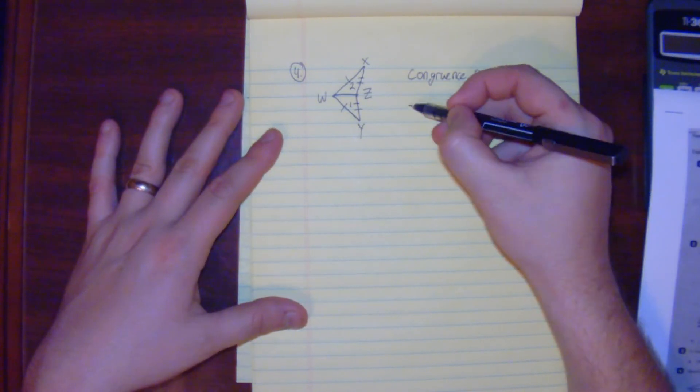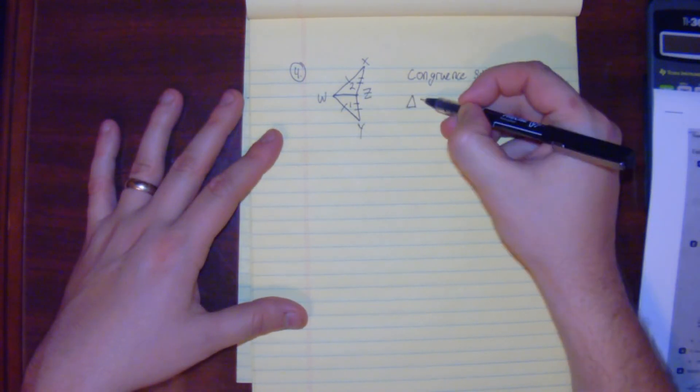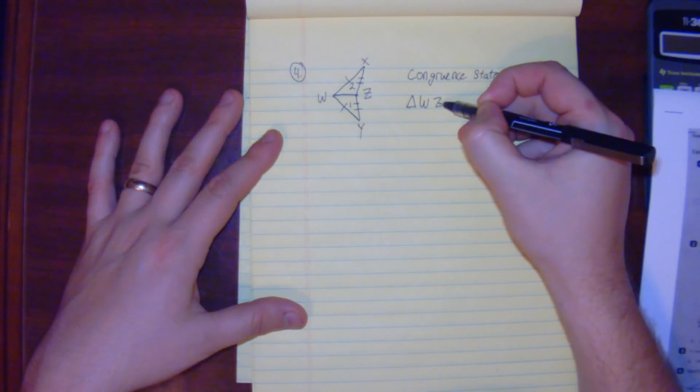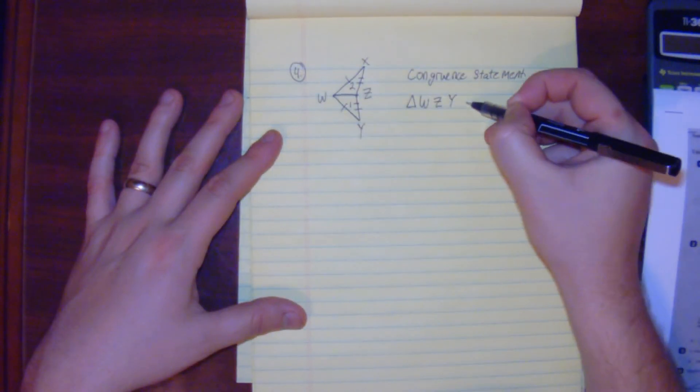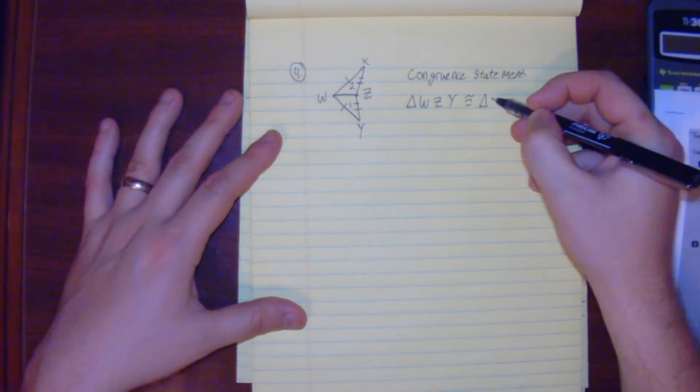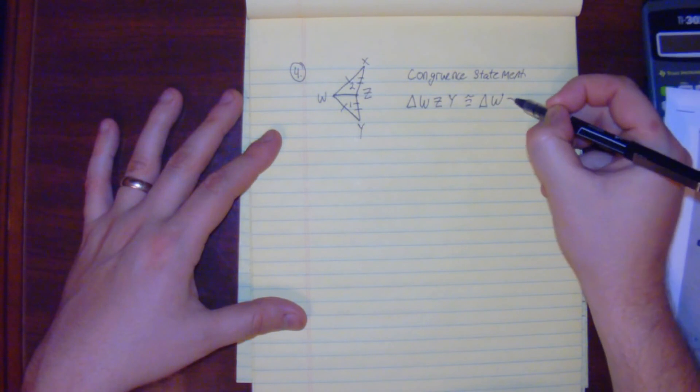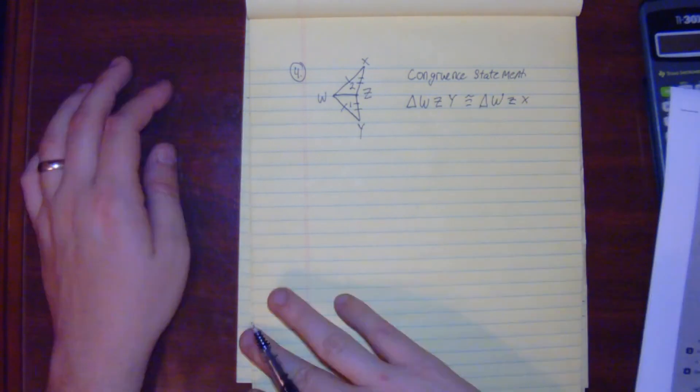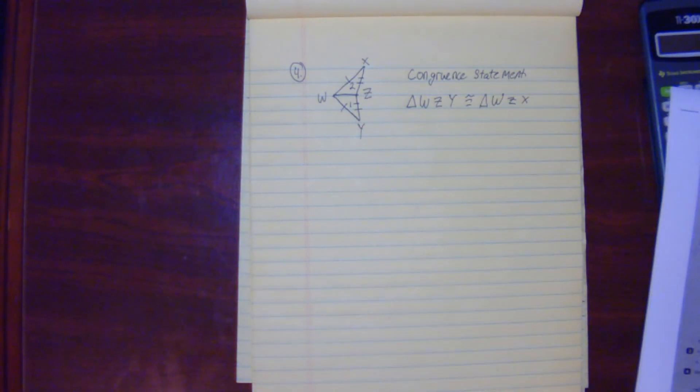Just do triangle WZY is congruent to triangle WZX. That is how we're going to show the congruent triangles - do a congruency statement.